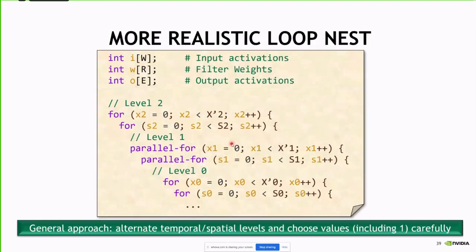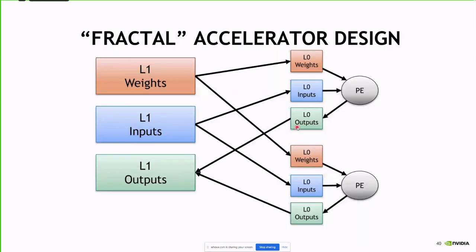To tie this back to where Tishar started: we can have a more realistic loop nest with several levels, scaling up temporal passes over parallelism. The general approach alternates: temporal scale-up for reuse, parallel for performance, then temporal for reuse again. You can set any of these values to one if you don't want that many loop nest levels. What you end up with is a fractal or clustered accelerator design with weight buffers distributing to L0 weight buffers, multicasting for some dataflows, partitioning for others.